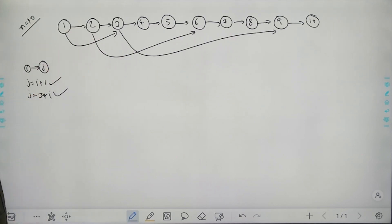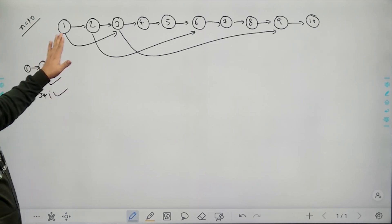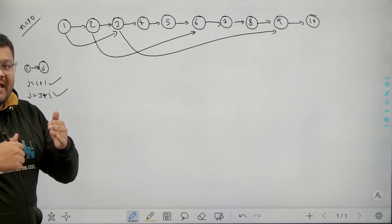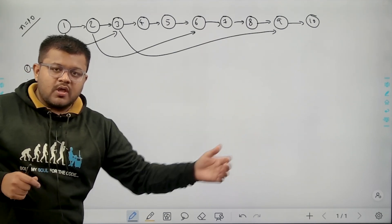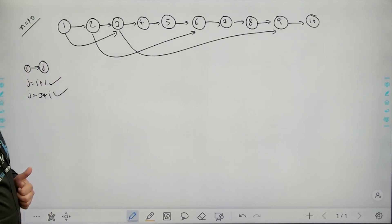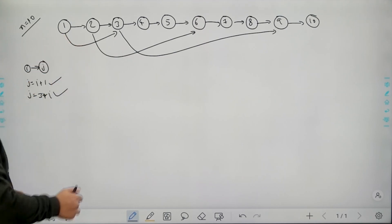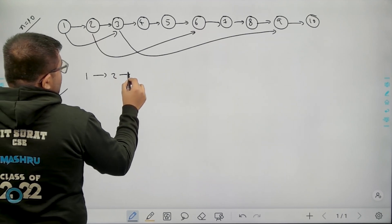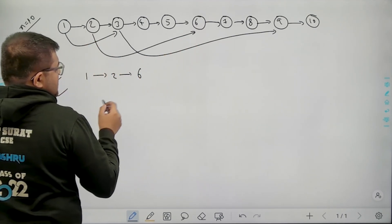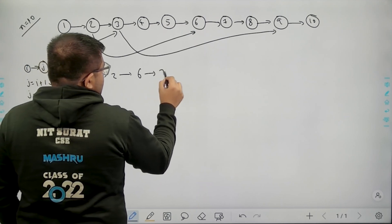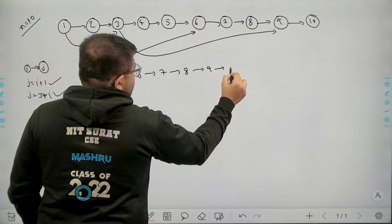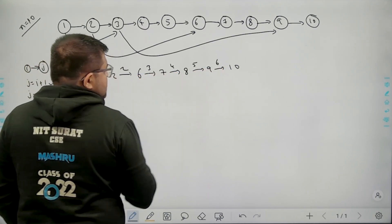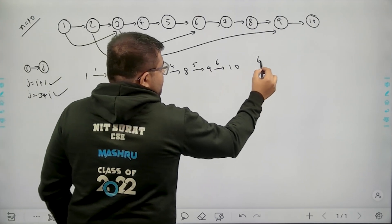I want to find the minimum number of edges — the shortest path from vertex 1 to vertex n. How will I get the minimum path? By taking as large steps as possible. So let's say I go from 1 to 2, then from 2 I go to 6, then 6 to 7, then 7 to 8, then 9 and then 10. How many edges are there? 1, 2, 3, 4, 5, 6. So there are 6 edges in this path from 1 to n.